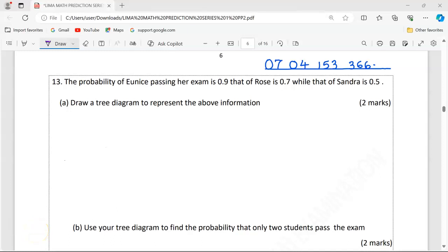Thank you for joining this lesson. We're going to study probability number 13. The probability of Eunice passing her exam is 0.9, that of Ross 0.7, while that of Sandra is 0.5.